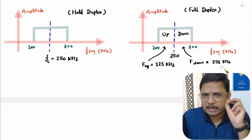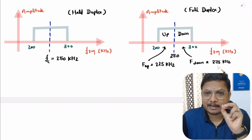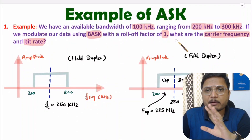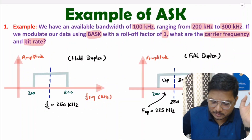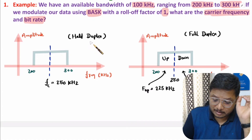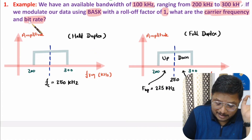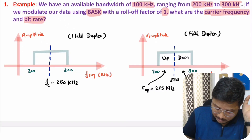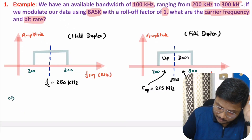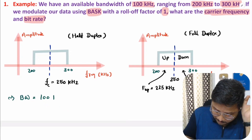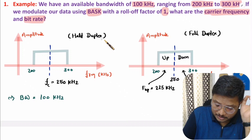First of all you need to understand which communication technique is given. Here in the question we don't have a communication technique specified, so you can consider this half duplex communication. Now I'll explain the bit rate calculation. Let me note down the data: bandwidth is 100 kilohertz, and we are considering half duplex communication.